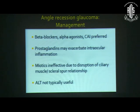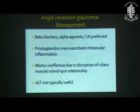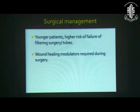The management of angle recession glaucoma — which is refractory to medical therapy — still begins with medical therapy as the first line. Beta blockers, alpha agonists, and carbonic anhydrase inhibitors are preferred. In cases with active inflammation, avoid the use of prostaglandins. Miotics may be ineffective in eyes with disruption of the ciliary muscle–scleral spur relationship, and argon laser trabeculoplasty is not typically useful. If medical management fails, surgical options are required; since these patients are usually young, wound modulators are essential due to high risk of filtering surgery failure.